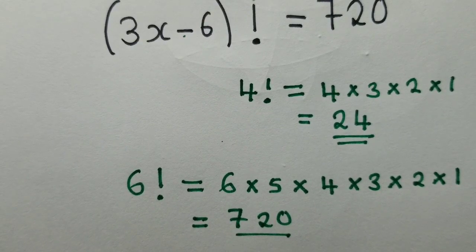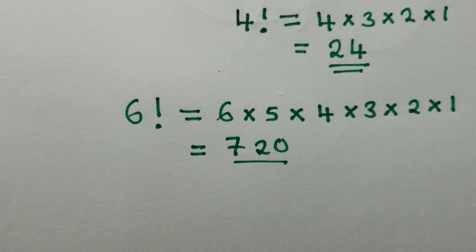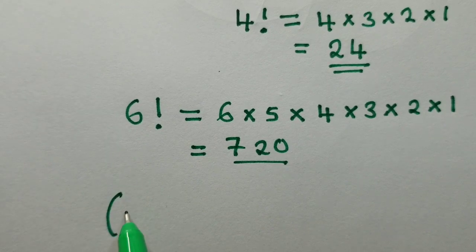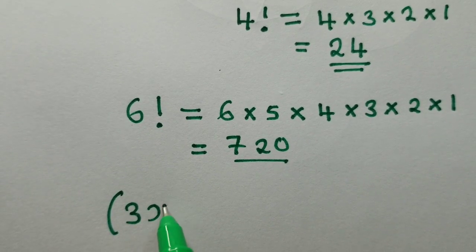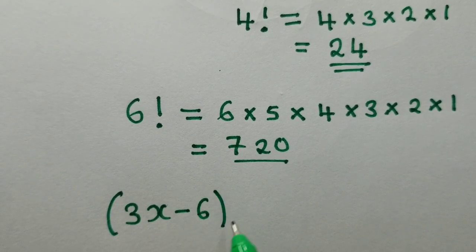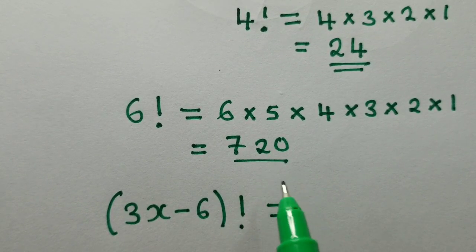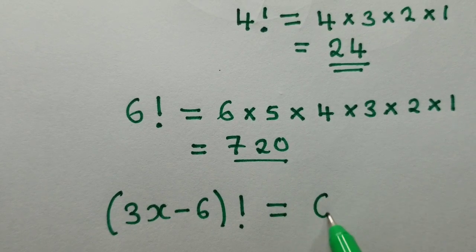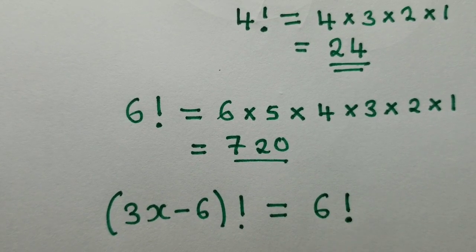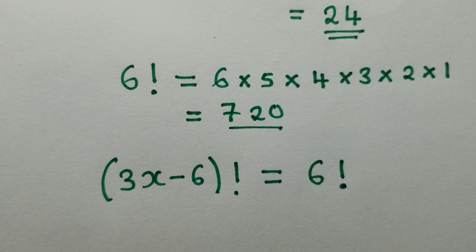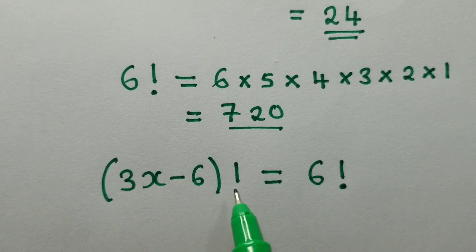So now it's easier to answer our question. To the left side of our equation, we have got (3x - 6)!, which is equal to 720, and we know that 720 would be equal to 6 factorial.